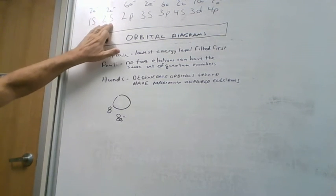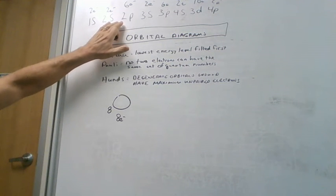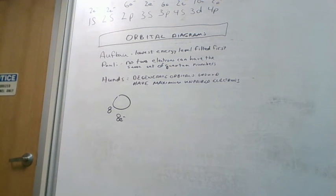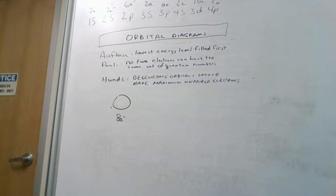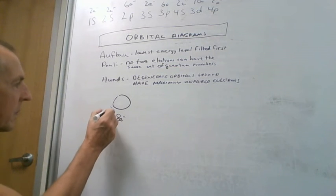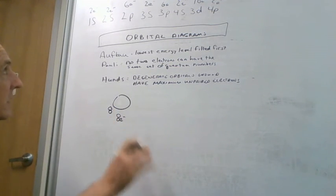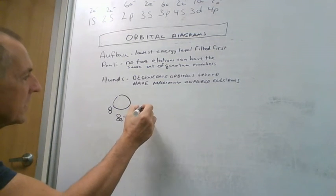Now we're still going to be here in the p, because we have two in our 1s, two in our 2s, and that leaves us with the rest to go in that 2p. Actually that's not element eight. I'm sorry. Don't have my glasses on, I can't see that far. Oh that was right. Never mind. It is element eight. Easily distracted.